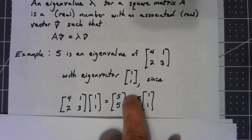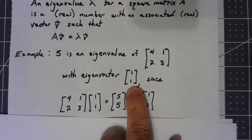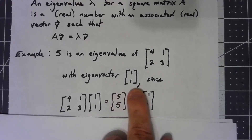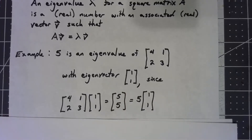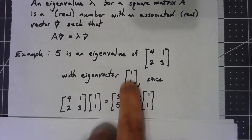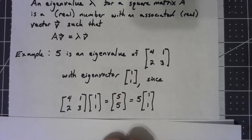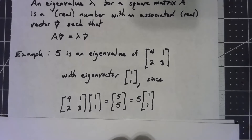It's worth noting that this isn't the only eigenvector for that eigenvalue. Any scalar multiple of this — like [2, 2], or [-3, -3], or [7, 7] — is also going to be an eigenvector for that eigenvalue.